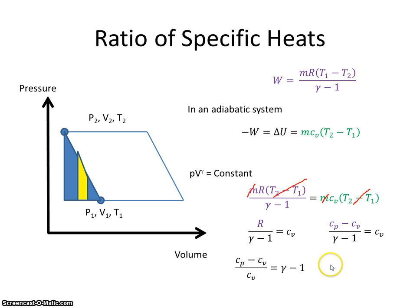And then it's just playing around with fractions. Bring gamma minus 1 up and cv down here, and then just divide them in.